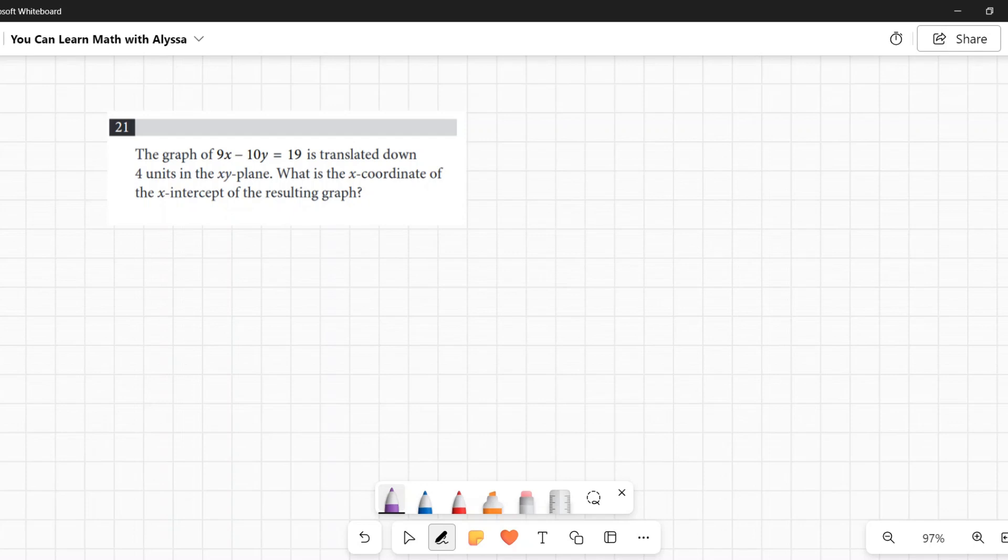First things first, I have an x and a y here, so that's a line. There's no x-squared, there's no square roots, nothing like that going on. This is just a line. So I want to put it into y equals mx plus b format, so I can get a good idea of where it is and graph it easily.